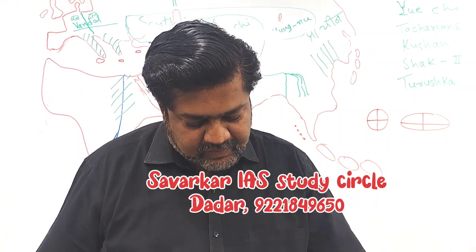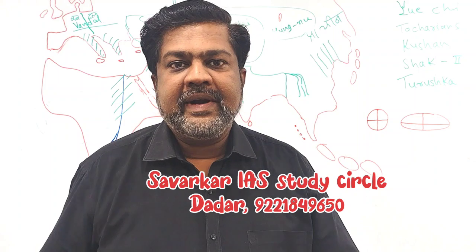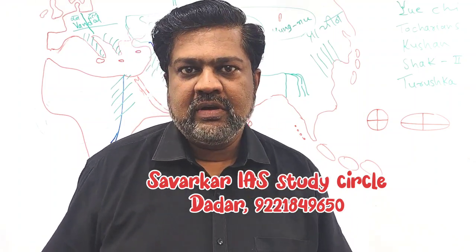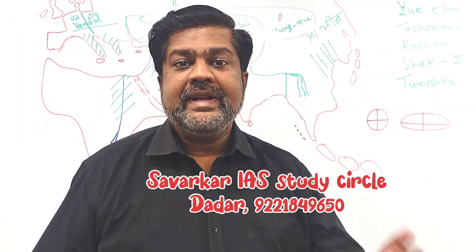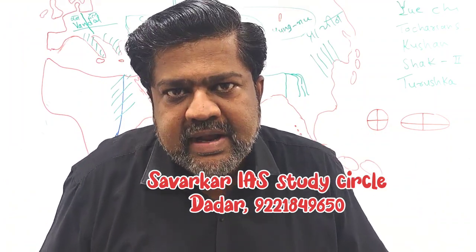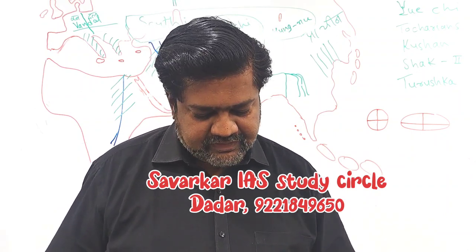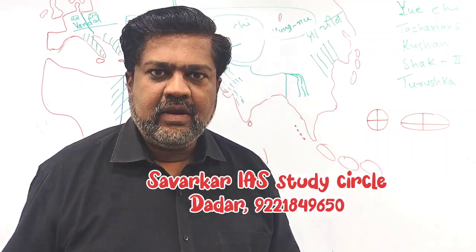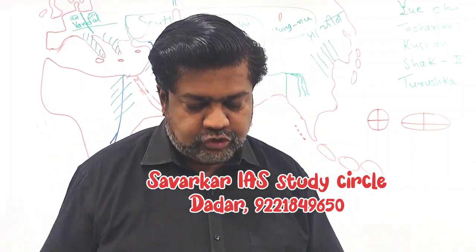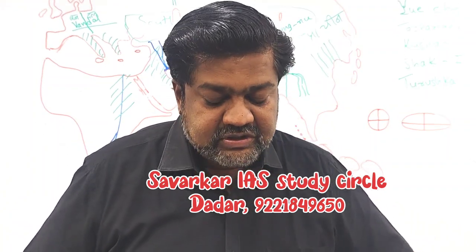Question thirteen: total cervical vertebrae present in the human body. Keep in mind that cervical vertebrae are in the neck region. Whether in a giraffe or in a human, the number of cervical vertebrae is the same — seven. Since seven is not among the given options (33, 39, 36), the answer is none of these, option D.